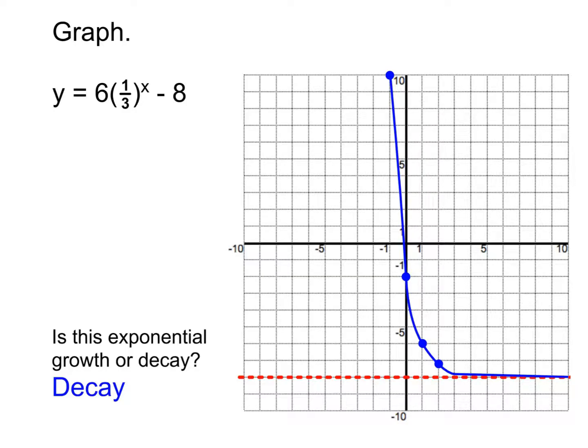Now how do we know it's decay? There's a couple indicators. One, if we go back to our notes, it says if that b value, in other words the number raised to the power of x, is between 0 and 1, it's decay. And notice here our b value is 1 third. That's one way you could know. And the other way is visually. As we're going to the right here, notice we're getting closer to the asymptote. That is, the amount that we have is reducing. It's diminishing over time. Therefore it's decaying.